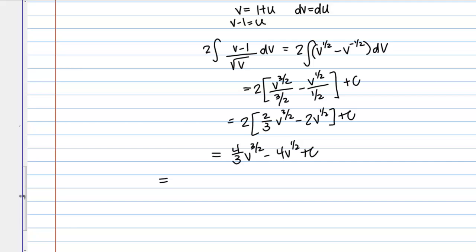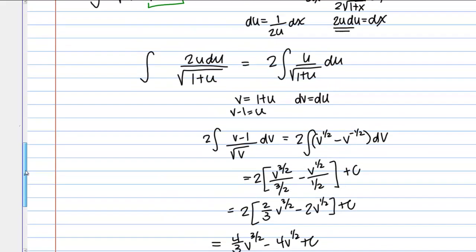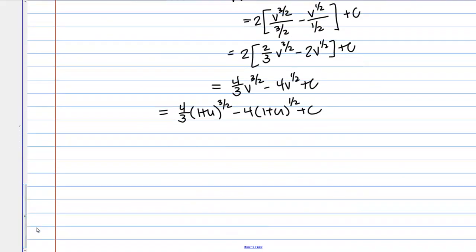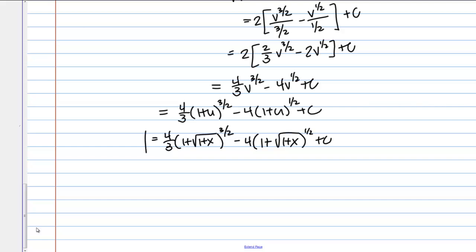Now we back-substitute to return to x. Since v equals 1 plus u, we have four-thirds times 1 plus u to the three-halves minus 4 times 1 plus u to the one-half. Since u was the square root of 1 plus x, the final answer is four-thirds times 1 plus square root of 1 plus x, to the three-halves, minus 4 times 1 plus square root of 1 plus x, to the one-half, plus c. The moral of these examples is that sometimes you have to be quite clever and perform multiple substitutions to get the integral to work out.